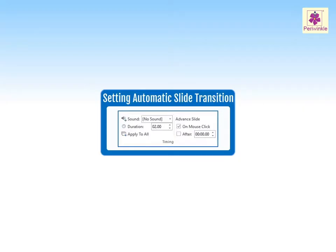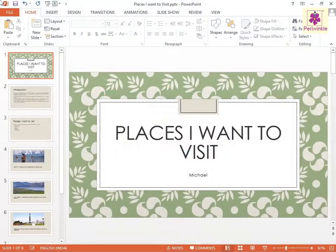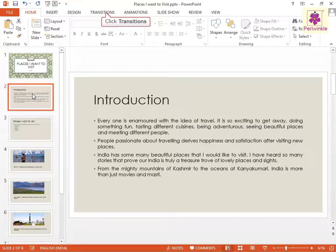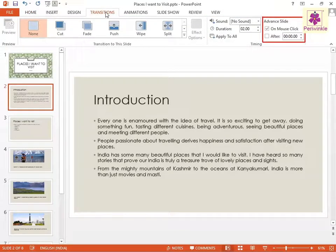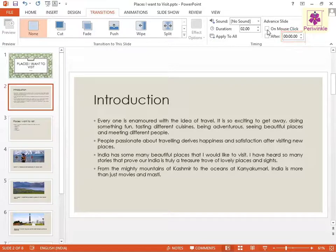In MS PowerPoint, you can set automatic slide transitions. Select the required slide and click on the Transitions tab. From the Timing group, under the Advanced Slide section, clear the On Mouse Click checkbox.